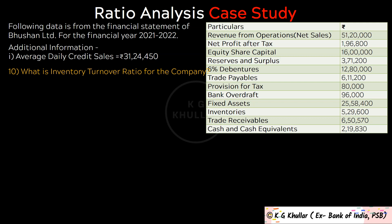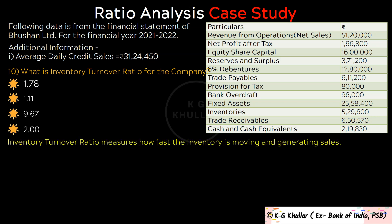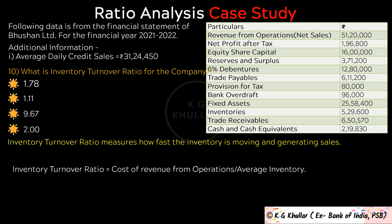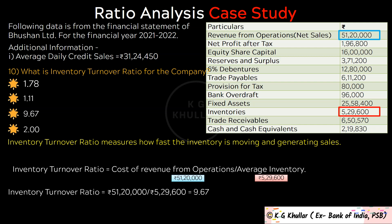The next question is: What is Inventory Turnover Ratio for the company? Inventory Turnover Ratio measures how fast inventory is moving and generating sales. It is calculated as Cost of Revenue from Operations divided by Average Inventory. Important note: when starting and ending inventories are not given and simply inventories are given, we take this as Average Inventories. So Inventory Turnover Ratio = Rs. 51,20,000 divided by Rs. 5,29,600, which equals 9.67. The correct option is option C.